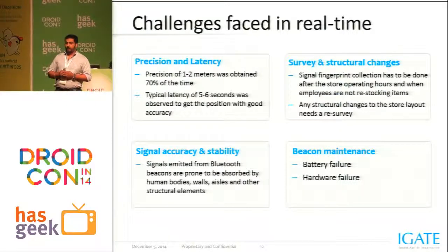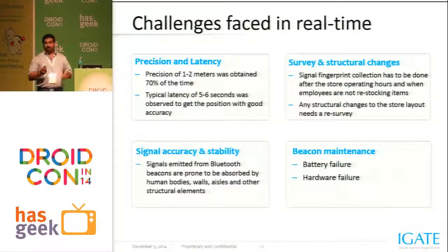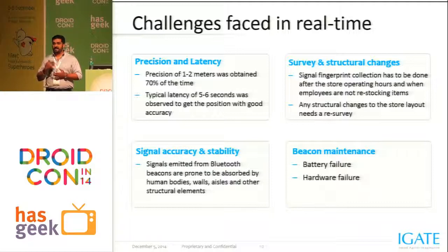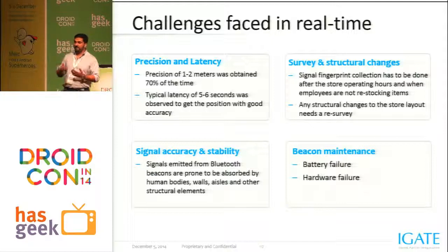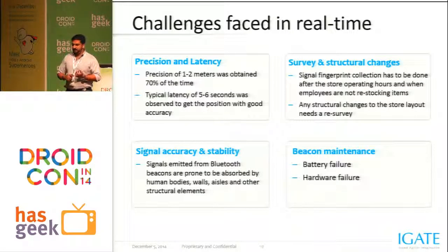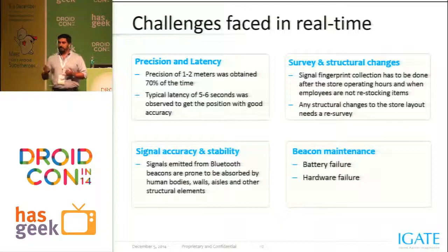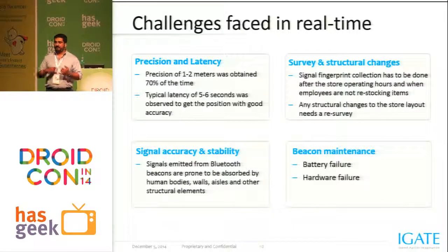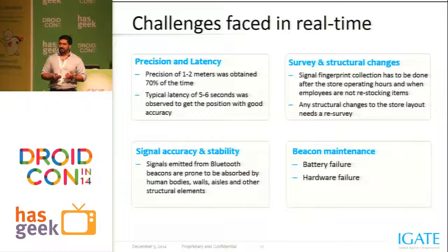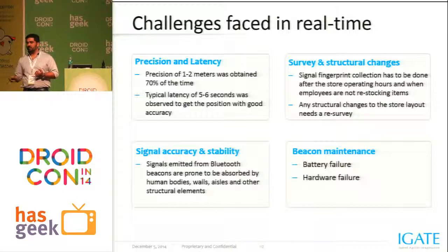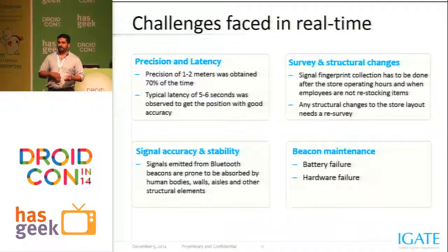Now the challenges faced in real time. Vendors claim you'll get exact precision, but in reality you get only around one to two meters of accuracy, and only 70% of the time. The time taken to show you exactly on the map is affected by advertising interval: if you reduce the advertising time to 20 milliseconds, accuracy increases, but battery discharge is more. Vendors claim one to two years of battery life, but in actual scenarios you get around one to two months. To improve accuracy you have to compromise on battery life.